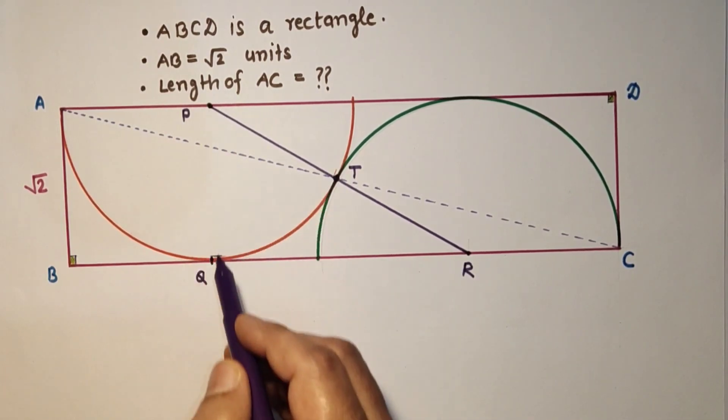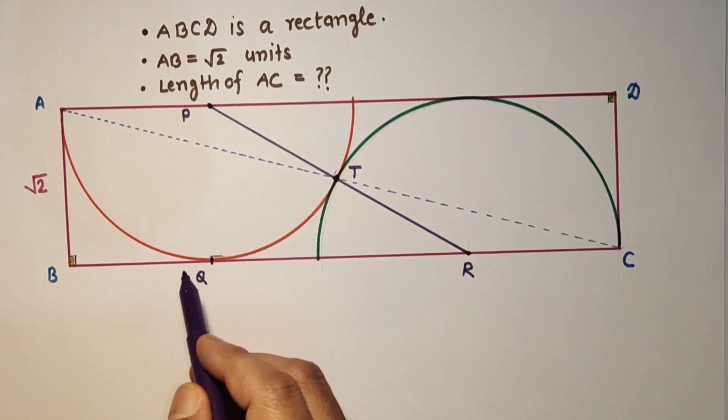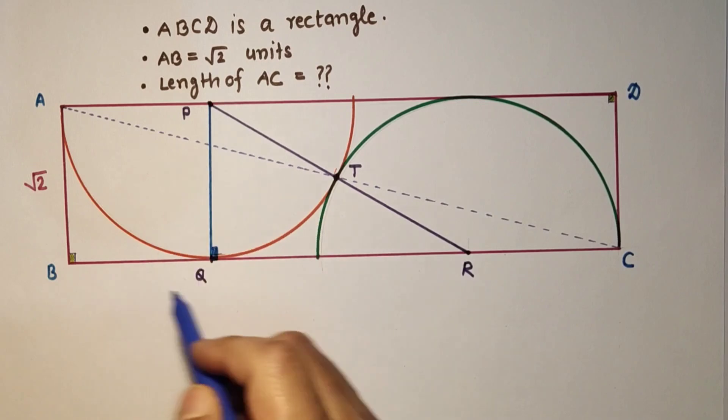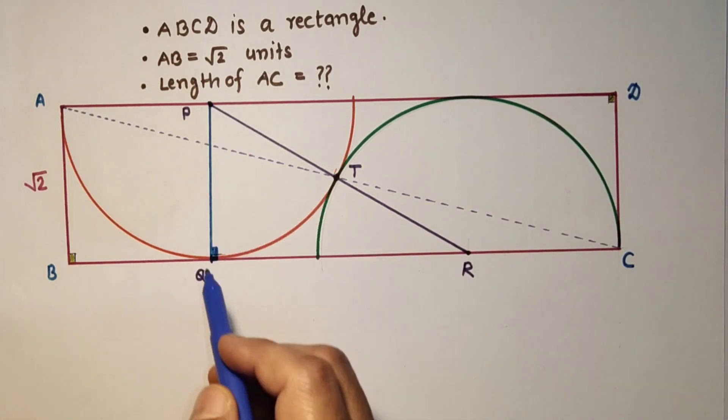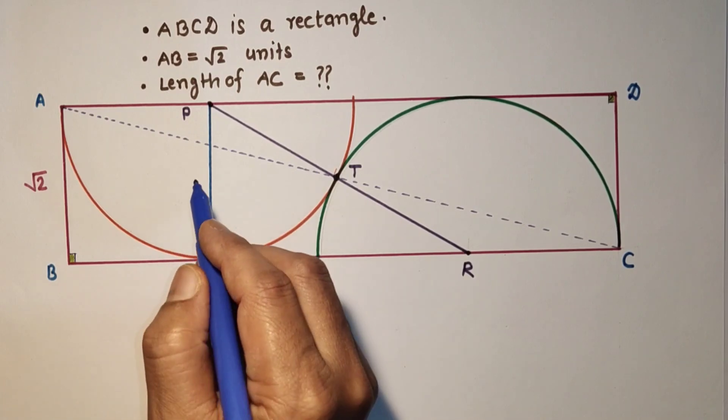And this is 90 degrees. Radius and tangent at the point of contact will be perpendicular. So if we join PQR, this PQR will be a right-angled triangle. In this triangle PQR, this PQ and AB and BQ all are equal.